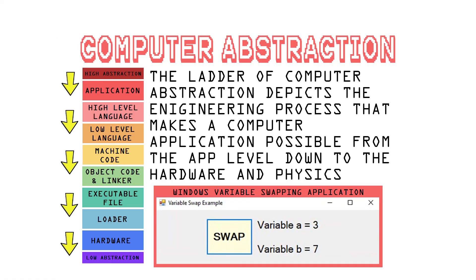That is a complete walkthrough of the computer abstraction levels using a variable swapping app as an example. Throughout many steps I gave simple summaries, but there is so much more to learn at each step — if you're curious about any of them, I encourage you to keep learning. The computer abstraction process is one of the most amazing engineering feats in all of human history.